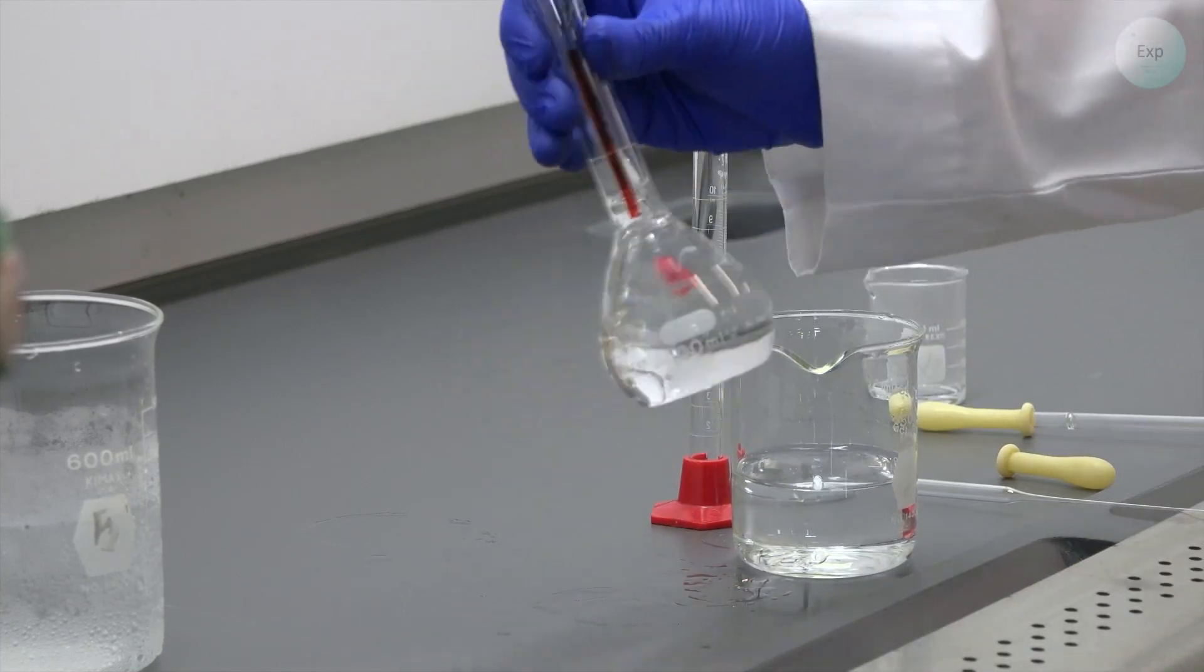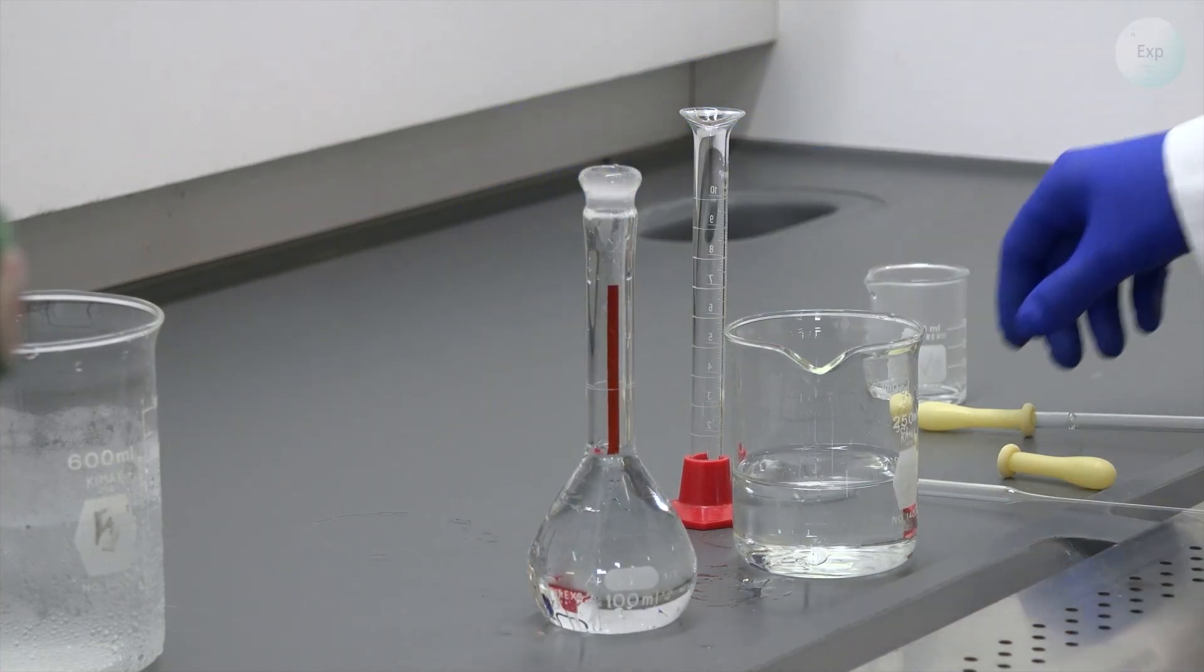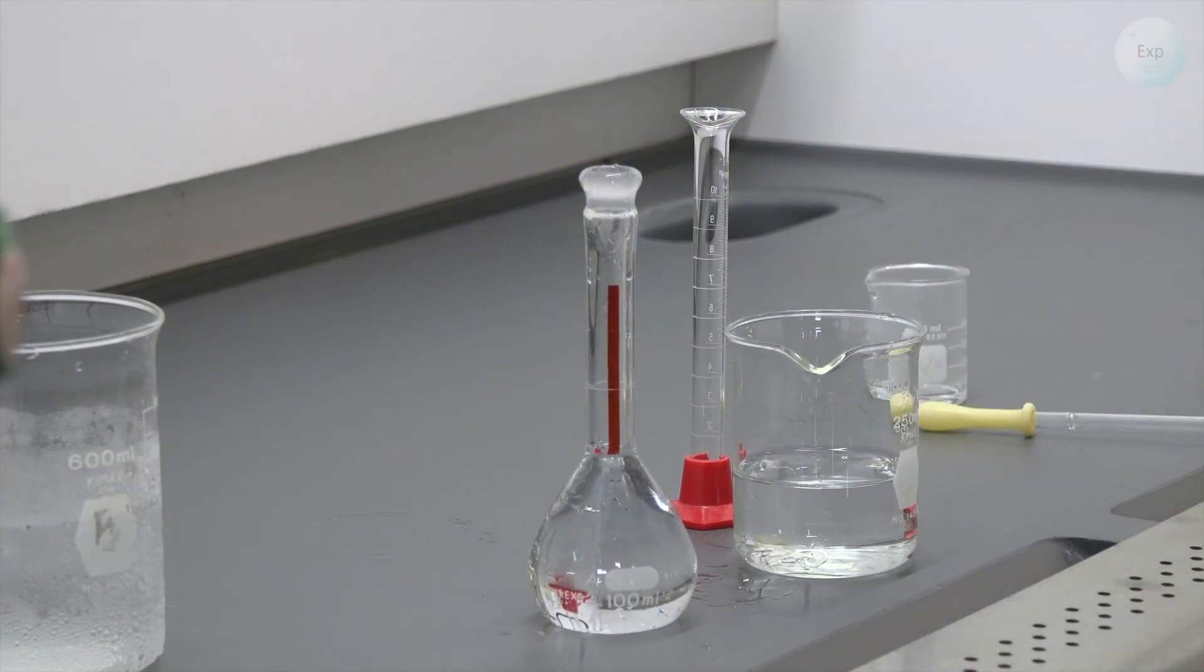At this point, swirling becomes extremely difficult. And we are close enough to the neck to transition to a pipette.